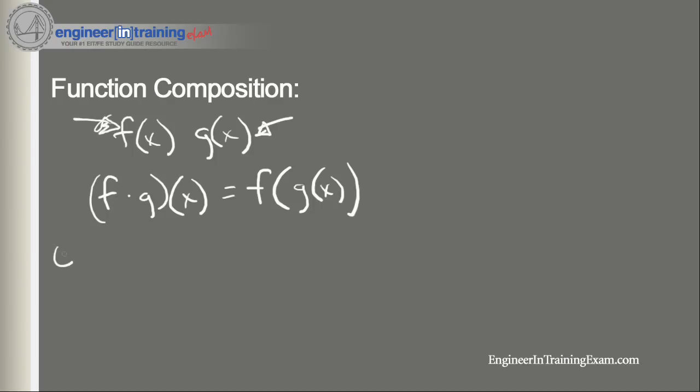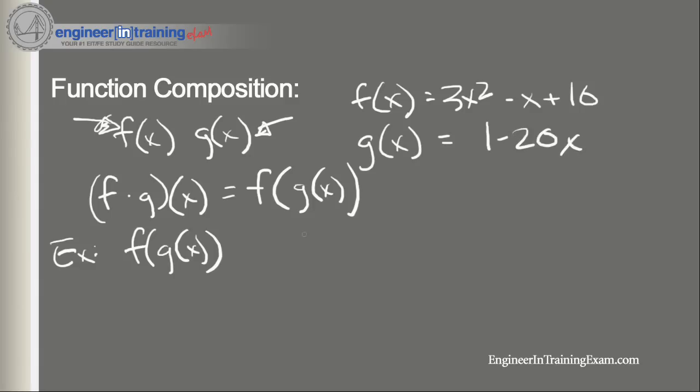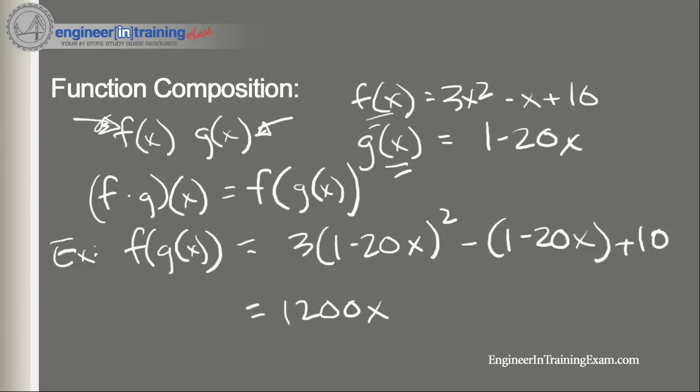Let's look at an example here. Let's take that same composition (f ∘ g)(x) and let's use the equations. Let's say we have f(x) equals 3x squared minus x plus 10, and let's say we have g(x) equals 1 minus 20x. So all we need to do is plug g(x) into f(x). So this will equal 3(1 - 20x)² minus (1 - 20x) plus 10. We can solve that out—just trust me that it's going to come out to 1200x² minus 100x plus 12.